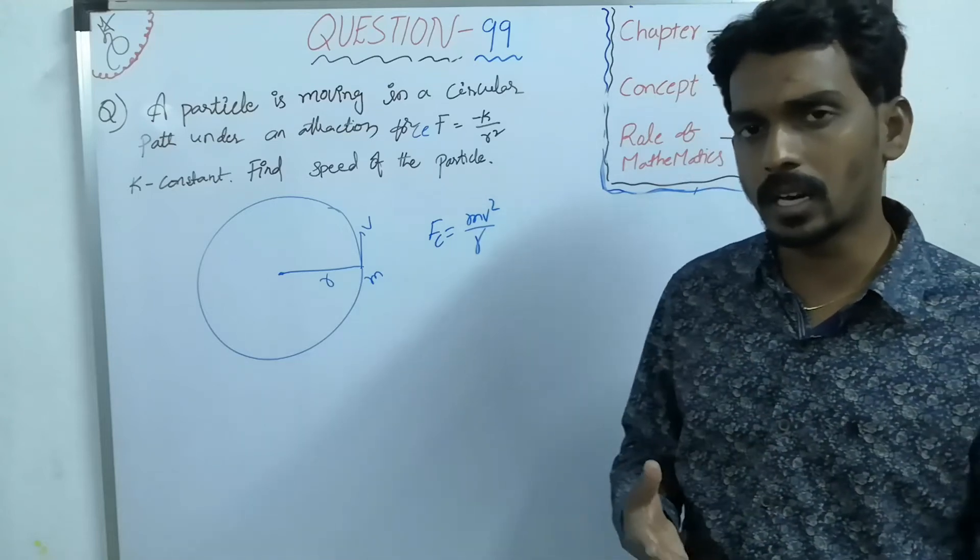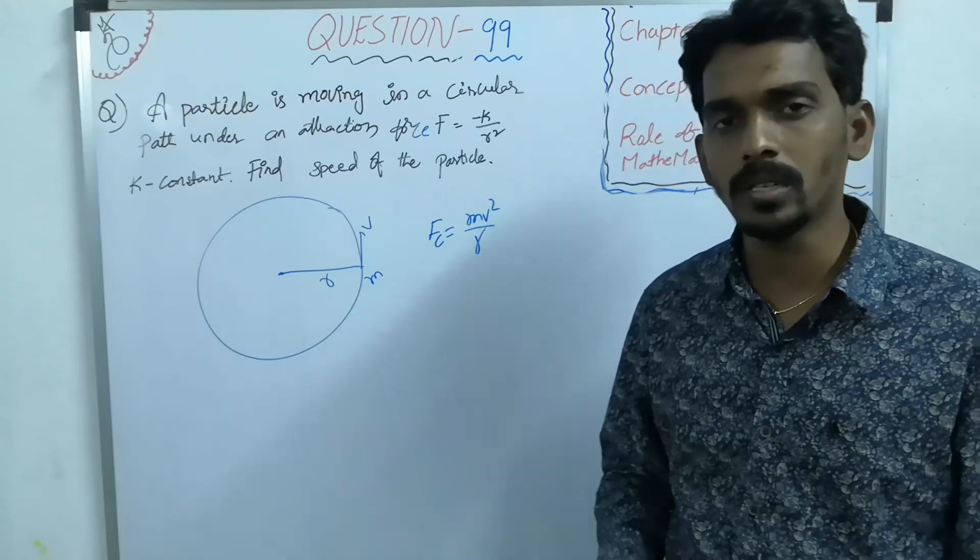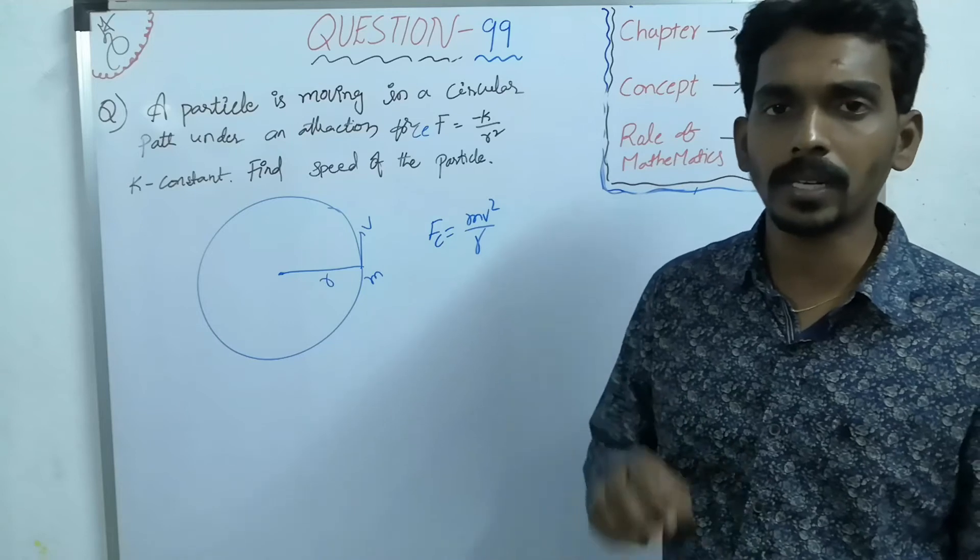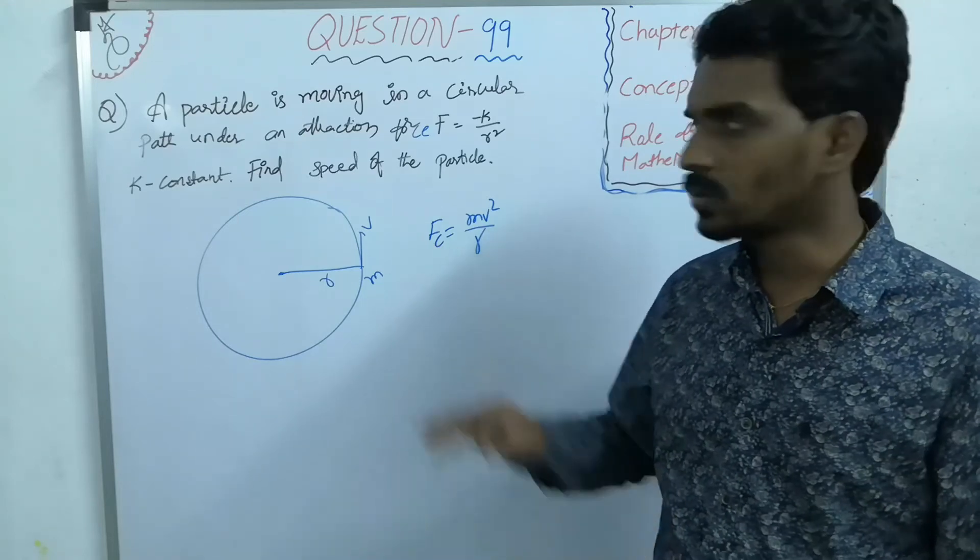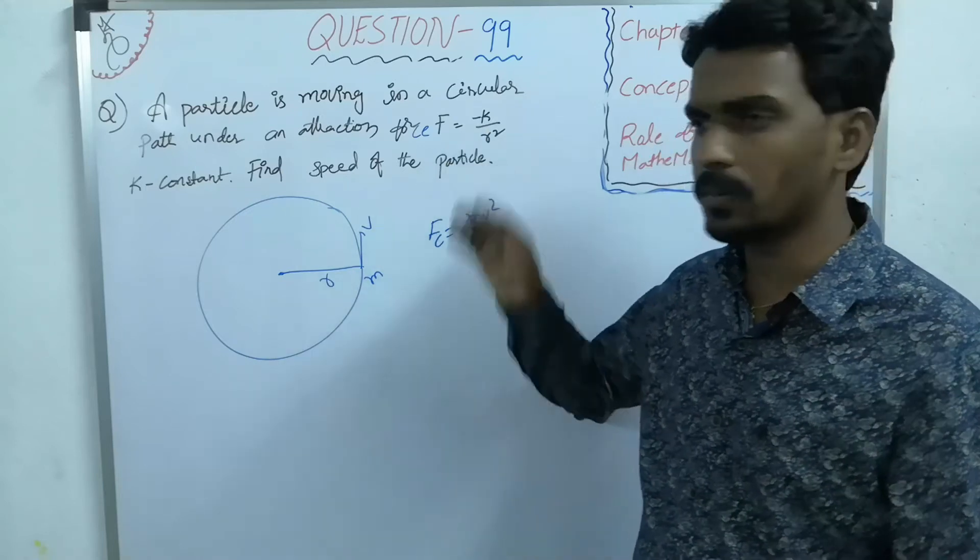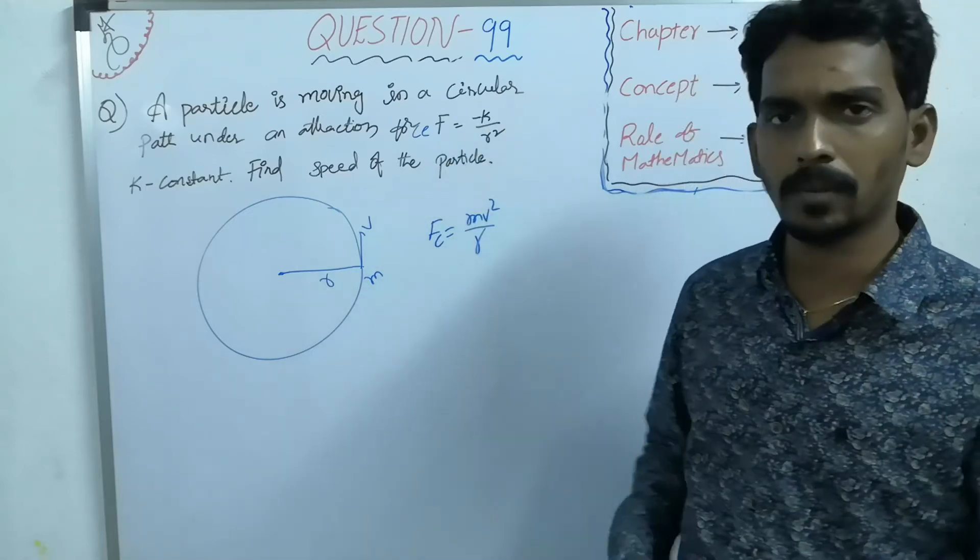Every particle moving in a circle requires centripetal force and that necessary centripetal force will be provided from some external force. Here, what external force is acting? Minus k by r square.